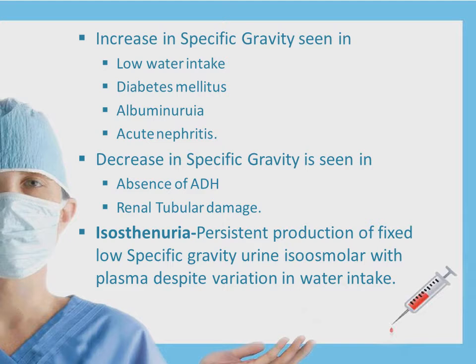Increase in specific gravity is seen in low water intake, diabetes mellitus, lobar pneumonia, and acute nephritis. Decrease in specific gravity could be related to absence of antidiuretic hormone and renal tubular damage. Isosthenuria represents production of fixed low specific gravity urine that is isomolar with plasma irrespective of variation in water intake. So this type of disorder does not respond to the amount of water intake; whether you take sufficient, lower, or higher than the usual amount of water, you will not get any specific gravity within the normal range.